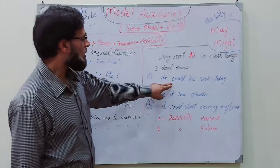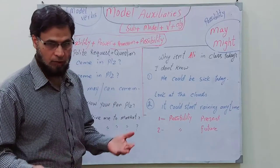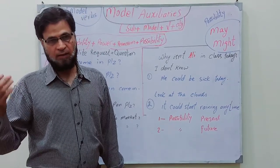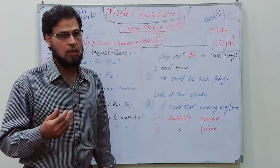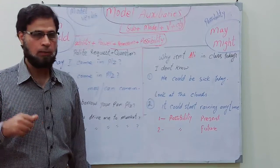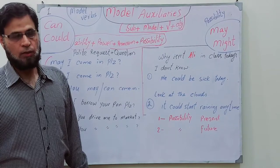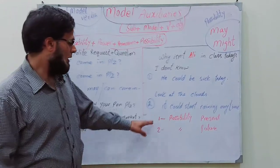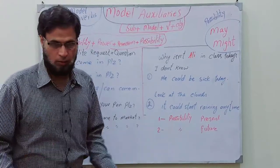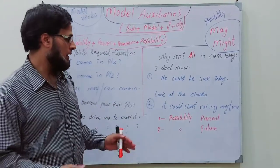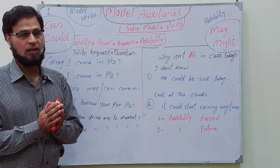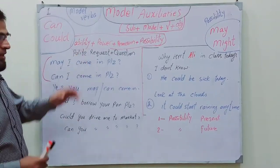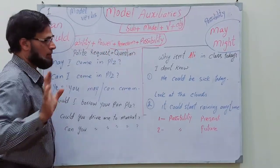So 'could' is used not only for past ability/power but also for present and future possibility — just as may and might are used in present and future. The conclusion is: may, might, can, and could can all be used in present and future for power, permission, and possibility. These are the four key uses.